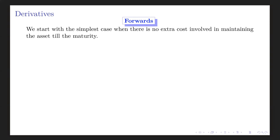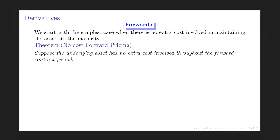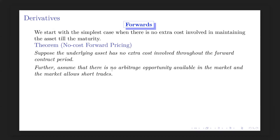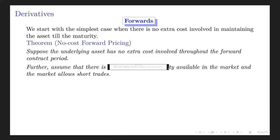We will see that later. For now, we assume there is no extra cost or income from the underlying asset during the forward contract period. The theorem we are going to state is under two assumptions: first, the underlying asset has no extra cost throughout the forward contract period; and second, there is no arbitrage opportunity available in the market.